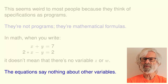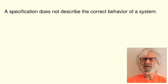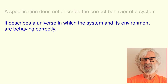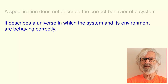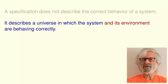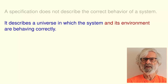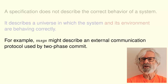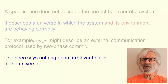It's useful to think about specifications as follows. A specification does not describe the correct behavior of a system. Rather, it describes a history of the universe in which the system and its environment are behaving correctly. The spec describes not only the system, but other parts of the universe that the system depends on. For example, the variable MSGS might describe an external communication mechanism such as TCP used by the two-phase commit protocol. The spec says nothing about parts of the universe that are not relevant to its abstraction of the system.